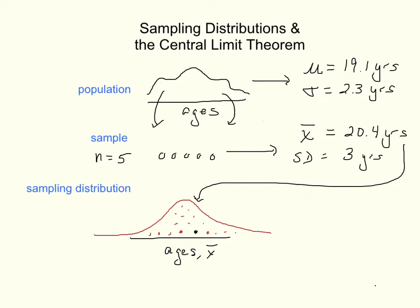First of all, not only is it normal, but the center, the mean of this sampling distribution, will be 19.1 years. It will exactly match the population's mean. And the standard deviation for all these sample means will be 2.3 divided by the square root of 5.